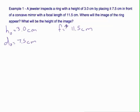You're asked where will the image of the ring appear and what will the height of the image be. So you're asked to find HI and DI. It's easiest to find DI first.